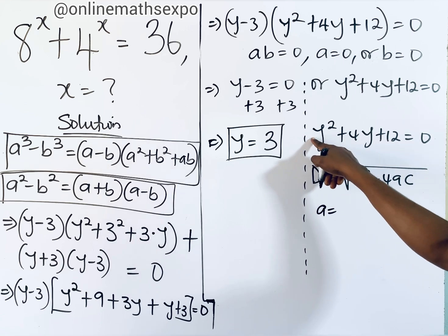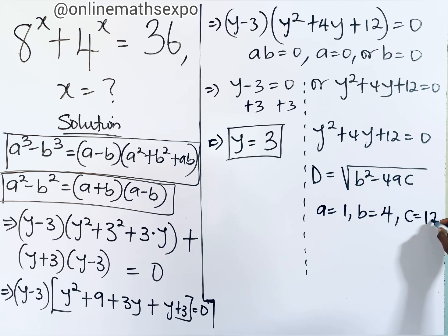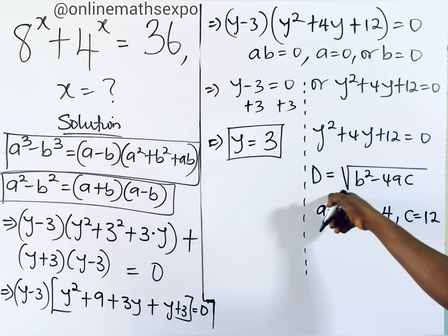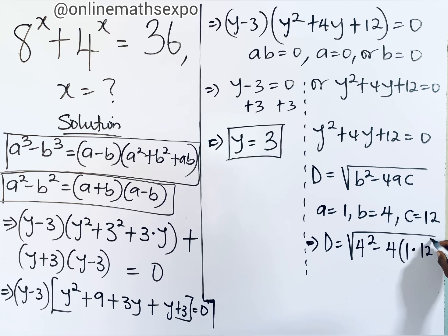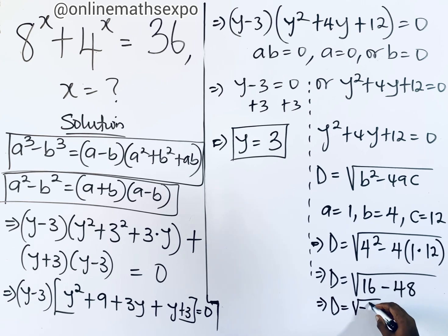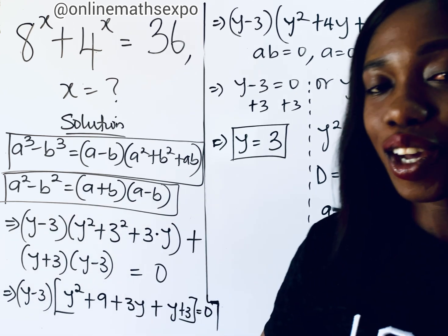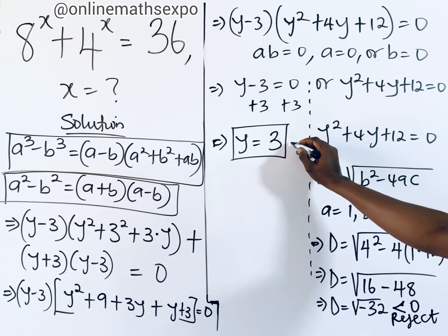For y squared plus 4y plus 12 equals 0, we identify a equals 1, b equals 4, and c equals 12. The discriminant is d equals square root of (b squared minus 4ac) equals square root of (16 minus 48) equals square root of negative 32. Since the discriminant is less than 0, this yields complex solutions, which we reject. We therefore use y equals 3.